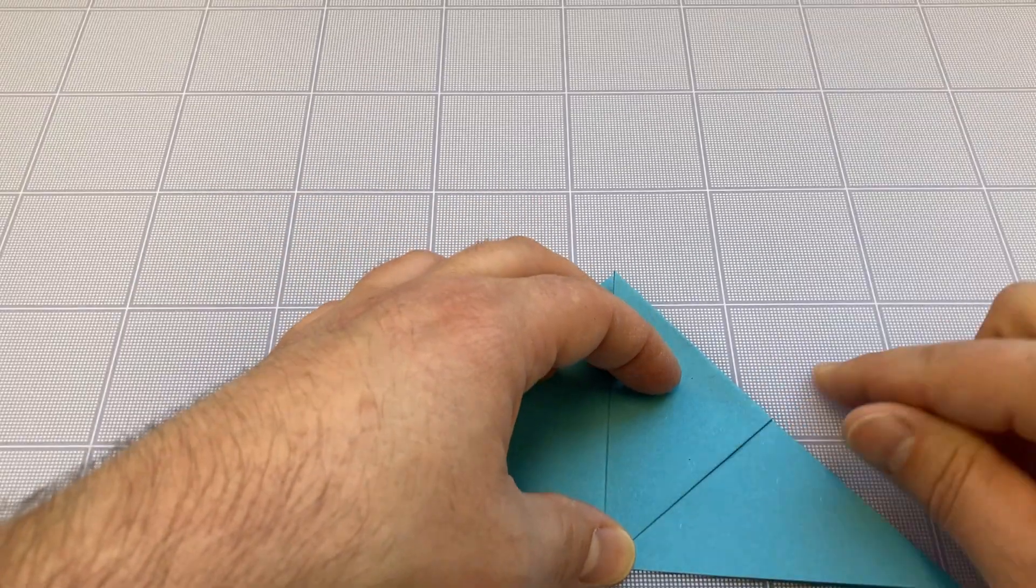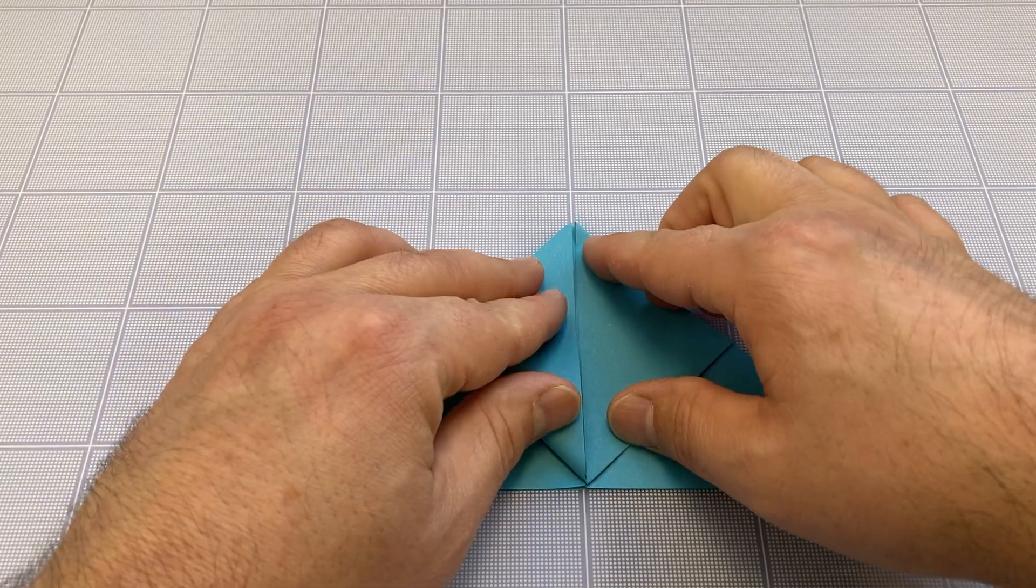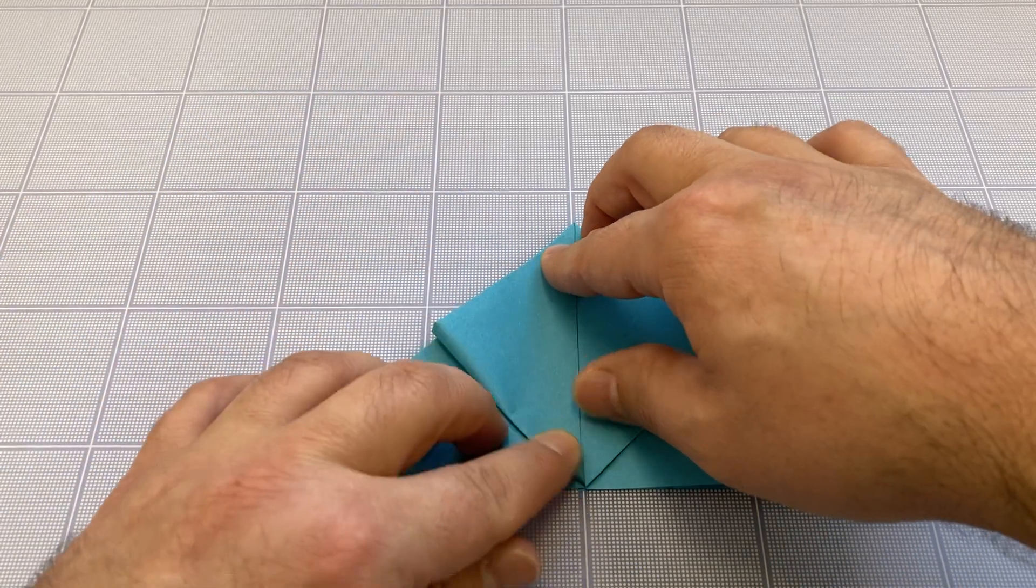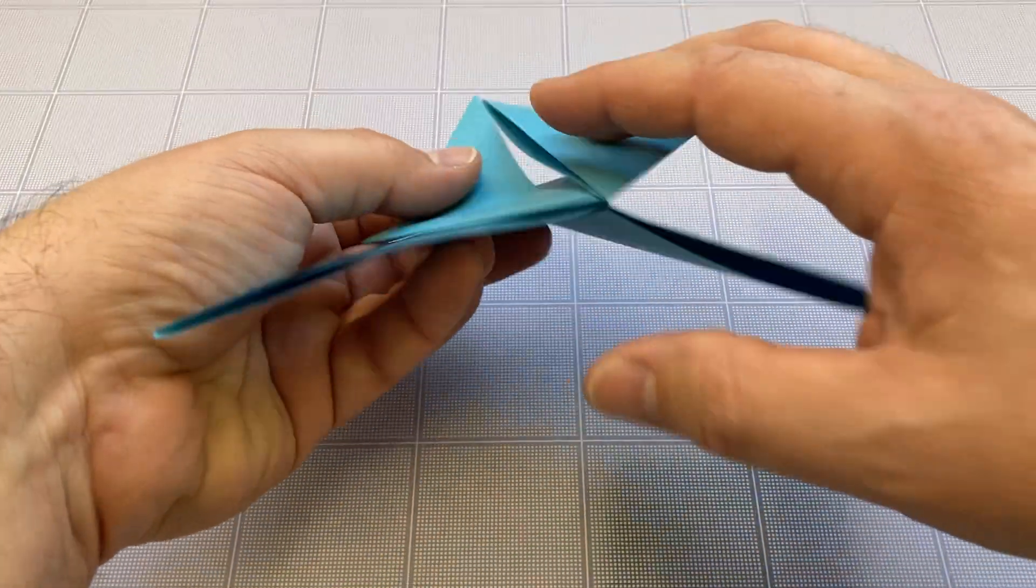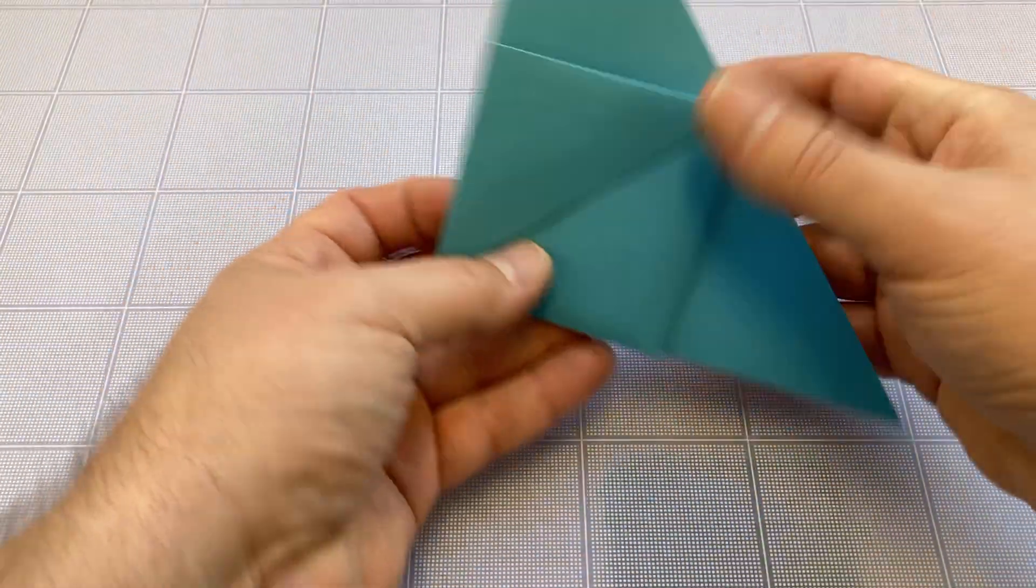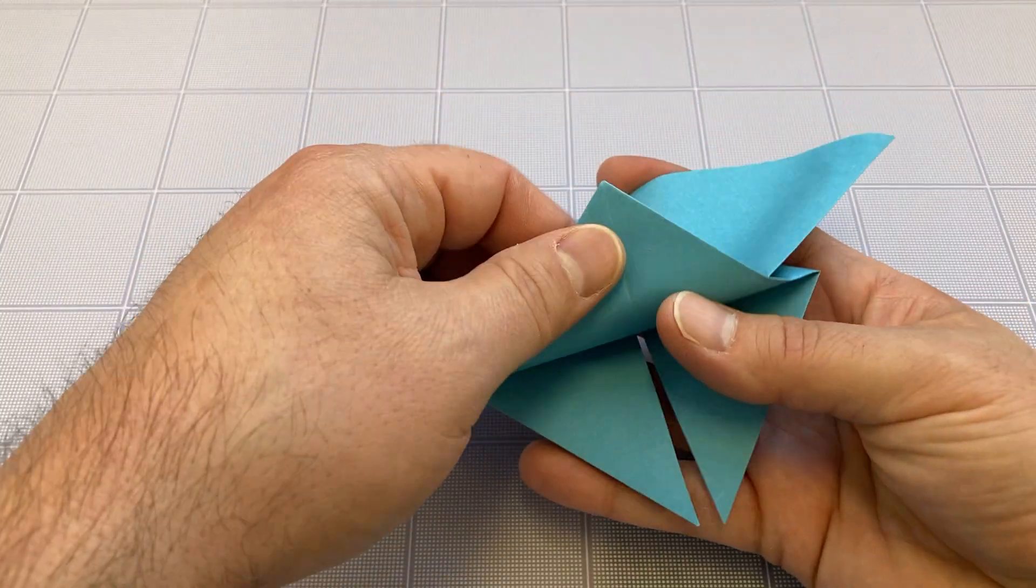Then grab the other flap and bring that up. I've got these two little flaps here. Flip it over. I want to grab this bottom corner.